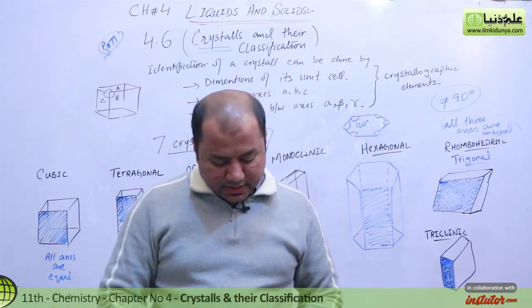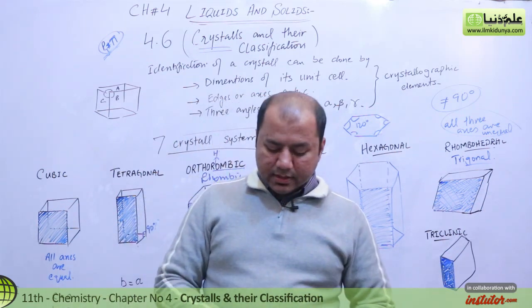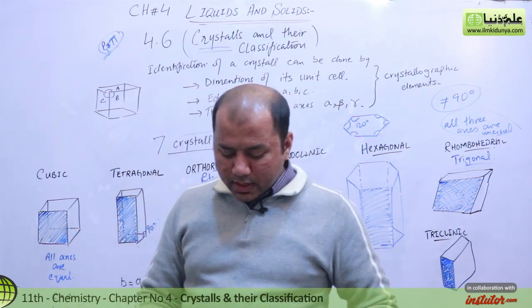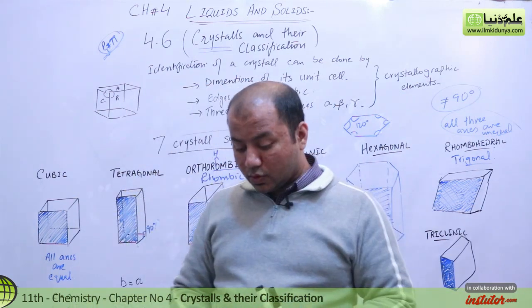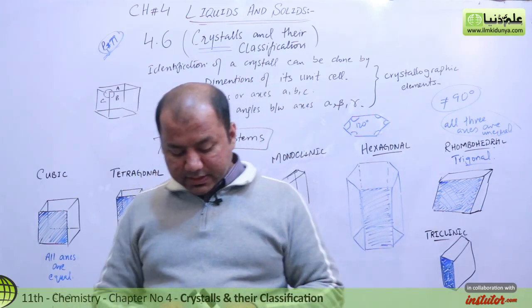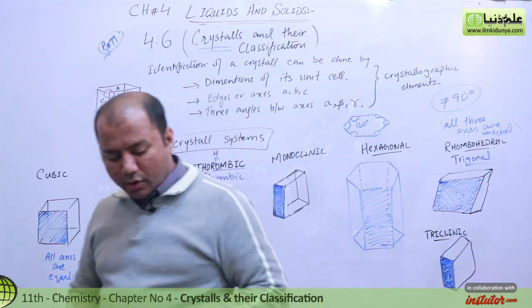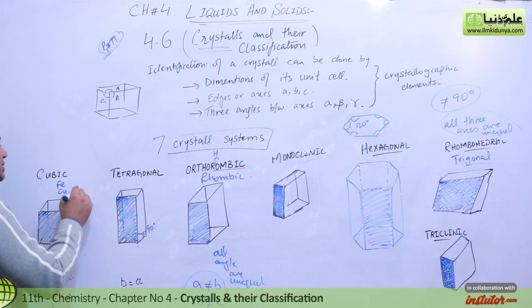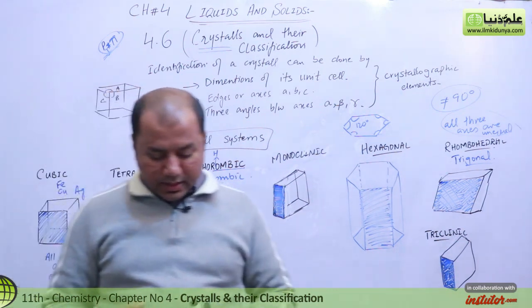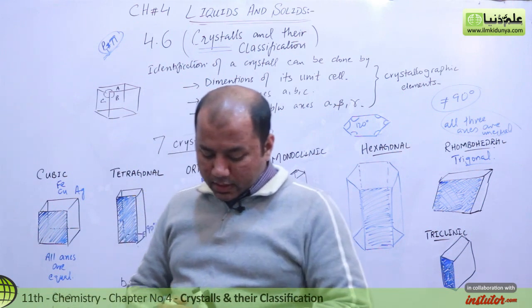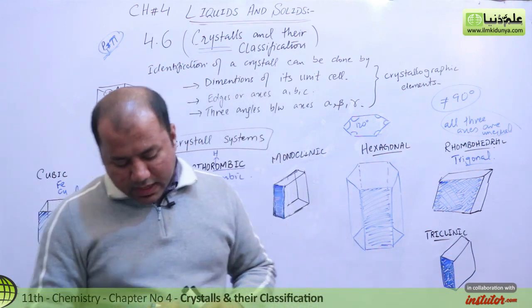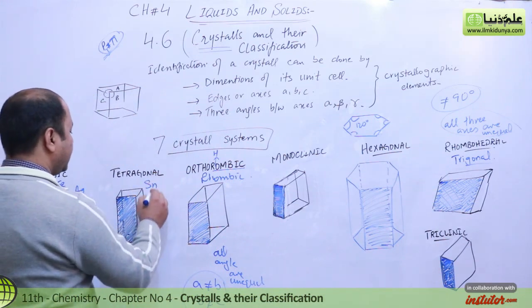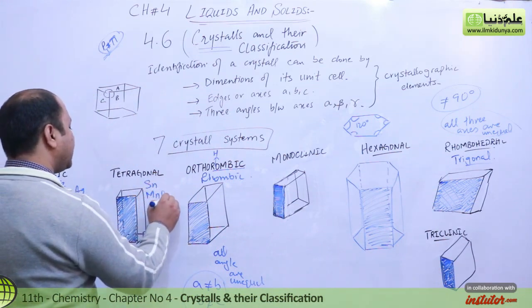The unit cell dimensions of our seven crystal systems along with examples are on page 101 of your book. For cubic: examples are iron, copper, silver. For tetragonal: tin and manganese dioxide. For orthorhombic: iodine and sulfur. These examples are very important — you must remember them, as they can appear in board MCQs.